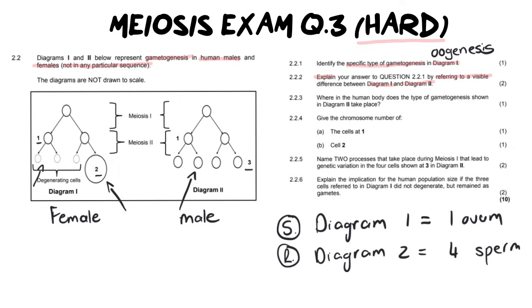Looking into our next question it says where in the human body does the type of gametogenesis shown in diagram two take place? Again this is why it was so important in the beginning to determine which one was male and female because that is male we actually have two answers. You could have said testes but if you want to be super specific you could have also said the seminiferous tubules. I would have gone with testes because that's the more obvious and easier answer to give.